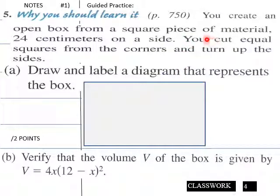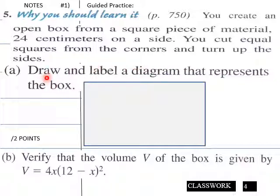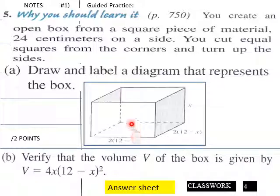Another maximum problem: you create an open box from a square piece of material 24 centimeters on a side. You cut equal squares from the corners and turn up the sides. Draw and label a diagram representing the box. This will be part of your guided practice. Then verify that the volume V of the box is given by V equals 4x times 12 minus x squared.